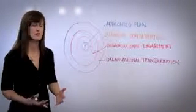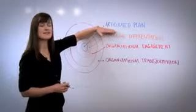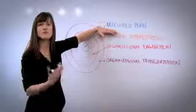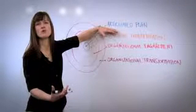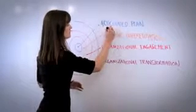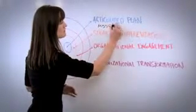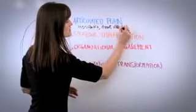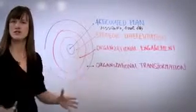So at the very base level, a strategic planning process is an articulated plan. People want an articulated plan for their organization. So what do I mean by that? That means we have a mission, we have a vision, we have goals, objectives, etc. An articulated plan.